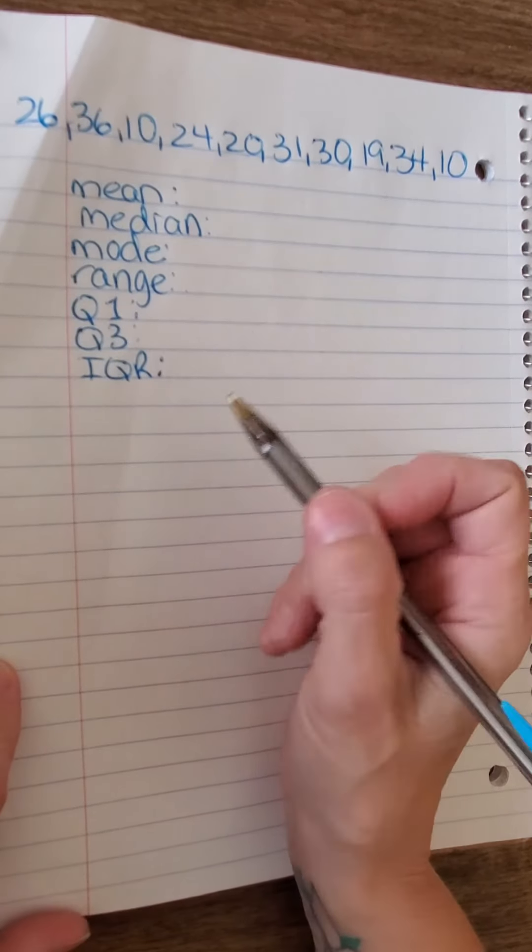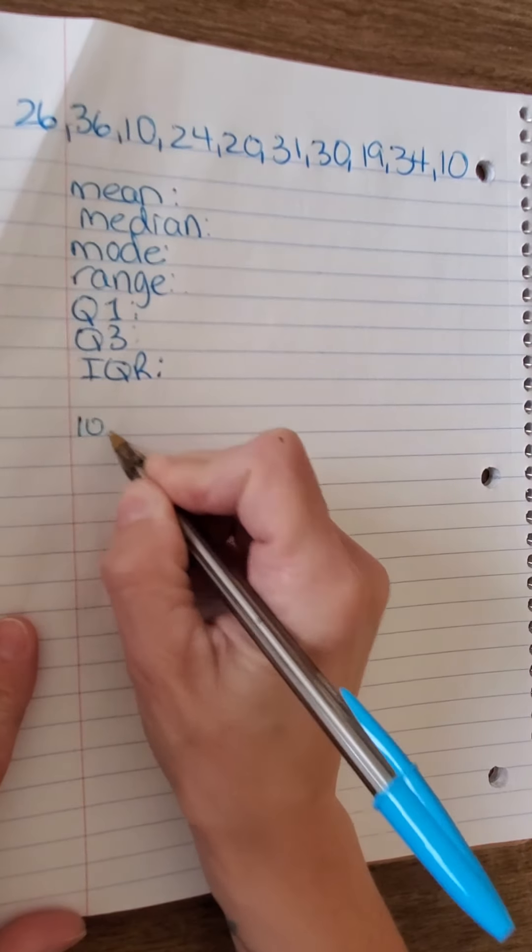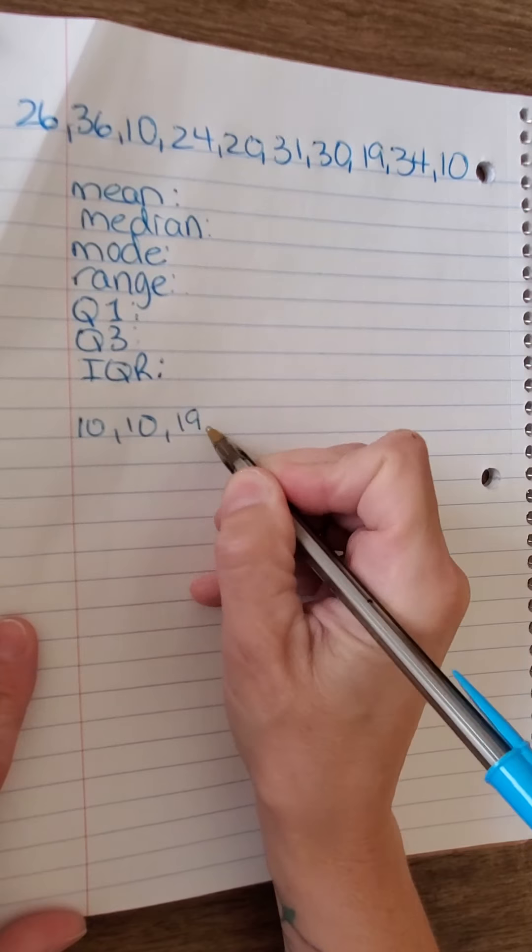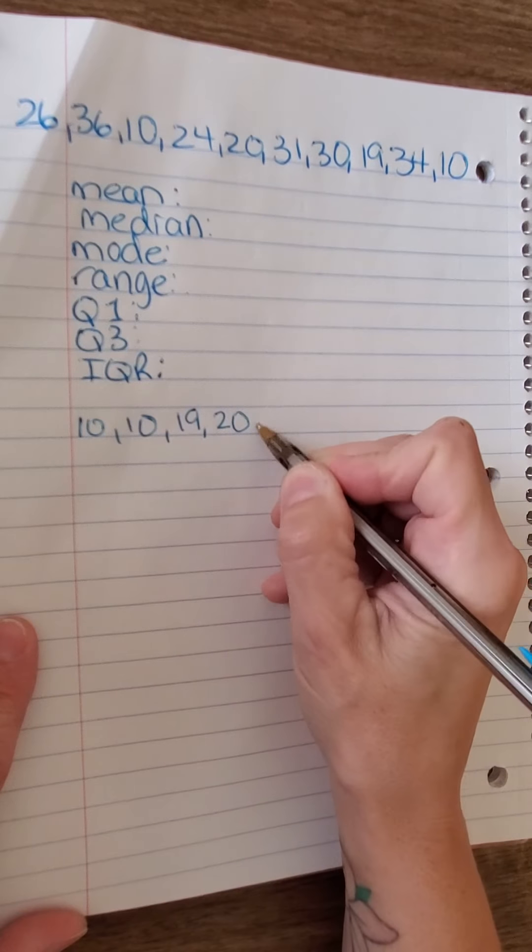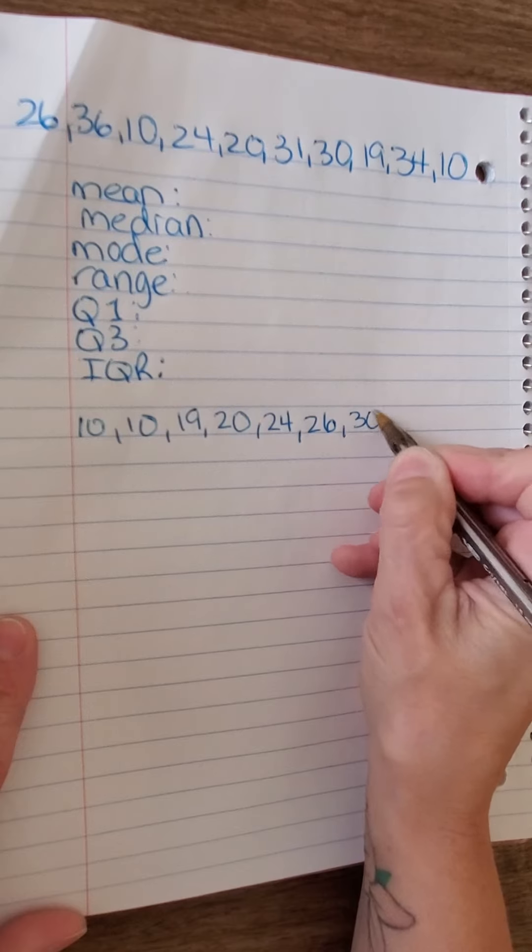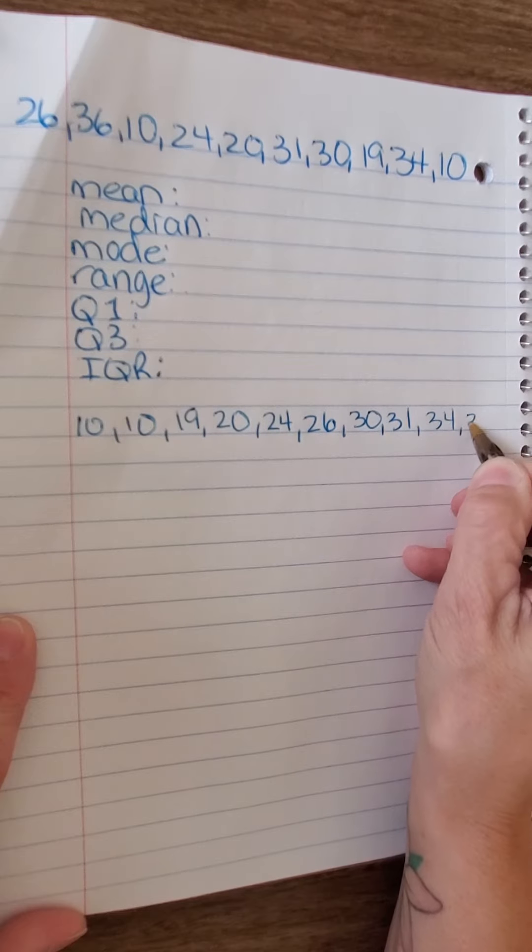All right, so the first thing we're going to do is put the numbers in order from least to greatest. So I have 10, 10, 19, 20, 24, 26, 30, 31, 34, 36.